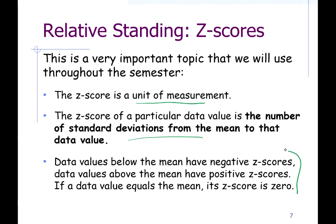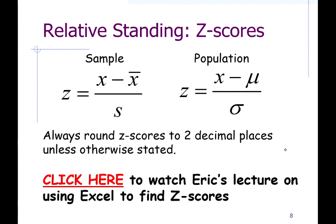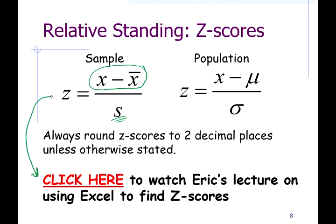There are a couple of ways to calculate z-scores: you can use a calculator and the textbook formula, or you can use Excel. Basically, you take the difference between an individual x value and the mean of the set, then standardize it by dividing by the standard deviation. It's x minus the mean, divided by the standard deviation.